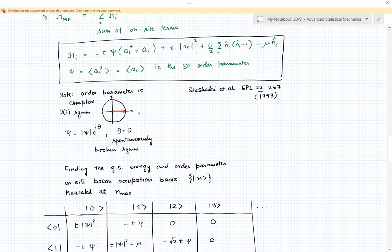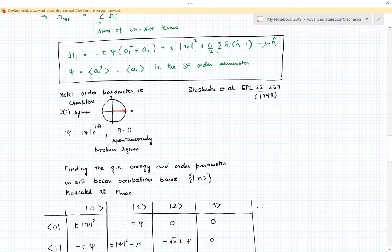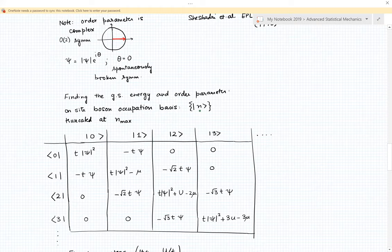Now importantly here, the order parameter in general has O(2) symmetry, so it lies on the complex plane. But we are going to assume that the system spontaneously breaks symmetry, so we can pick theta equal to zero as the direction in which the symmetry is broken. All the phases lie along theta equal to zero, but what we will solve for is the magnitude of the order parameter. This single site Hamiltonian we can now write out in the occupation basis n, so either at the site we have zero bosons, one, two, three and so on - a tower of states that we can truncate at some maximum value.